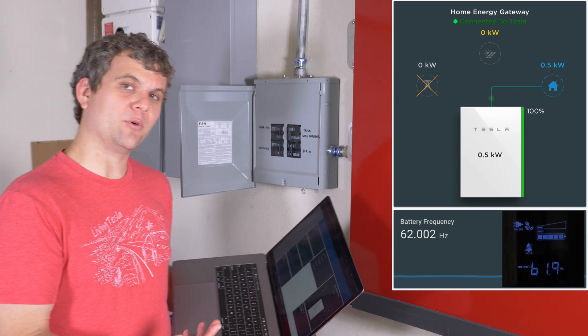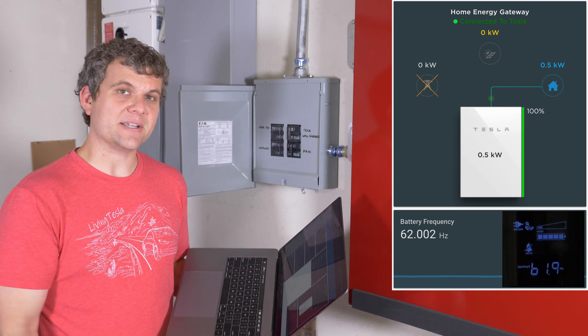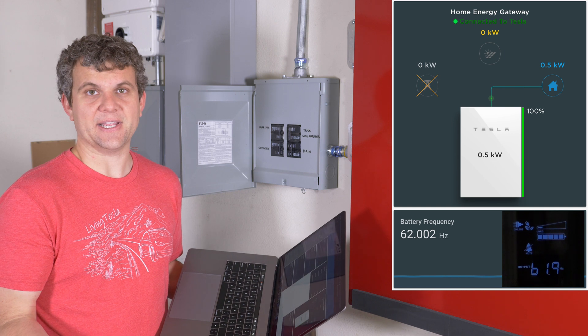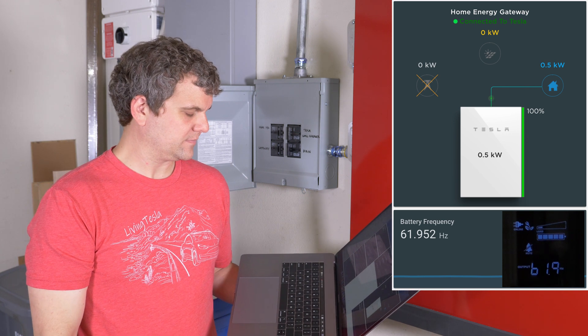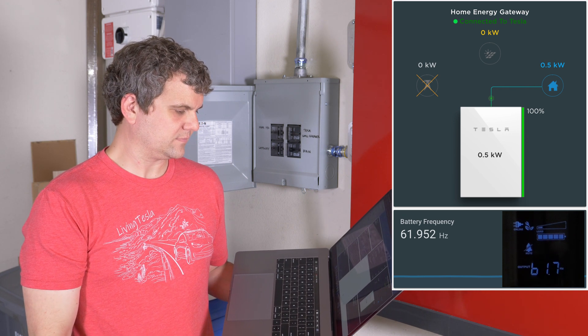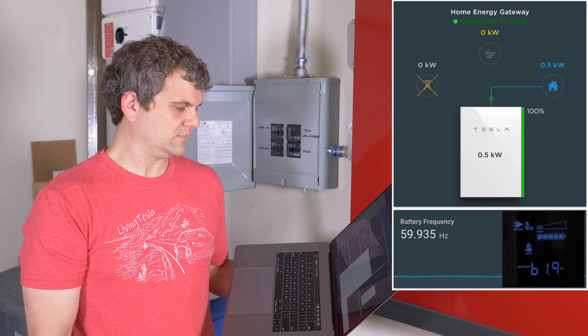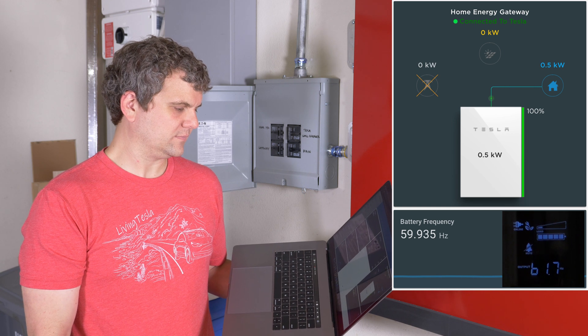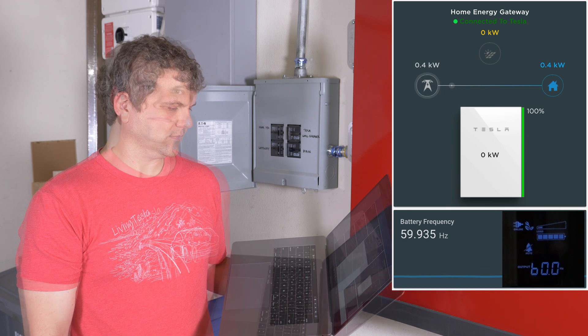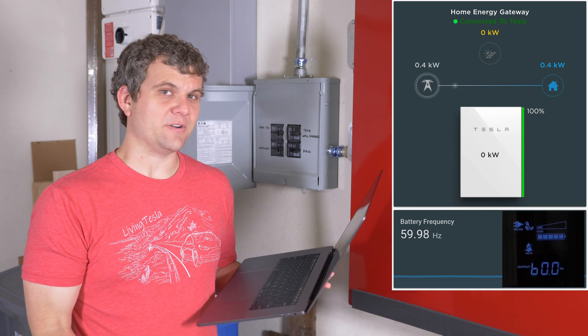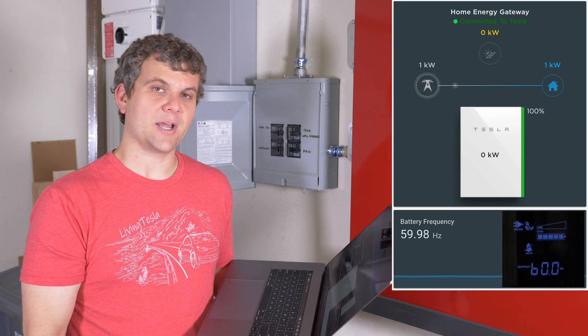So let's turn the power back on, reconnect the grid. And we should see that battery frequency come back down as the Powerwall is telling solar, hey, I can get some power again. So, there we go. We're back down to 60 hertz. Everything's working like it should. Never saw a loss of power on the UPS and everything's coming back online.